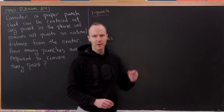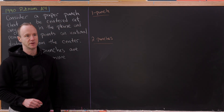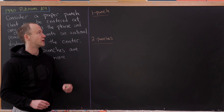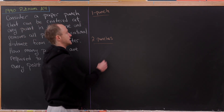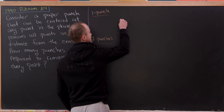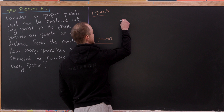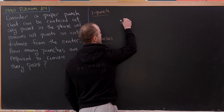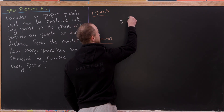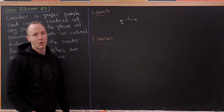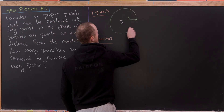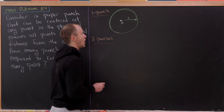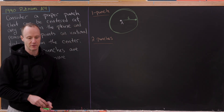Let's look at the small cases, which are obviously too few punches. If you do one punch at point A, that's clearly not enough. You can find another point distance one away from A — that point is not removed. You could sweep out a unit circle centered at A, and all of those points will also not be removed.